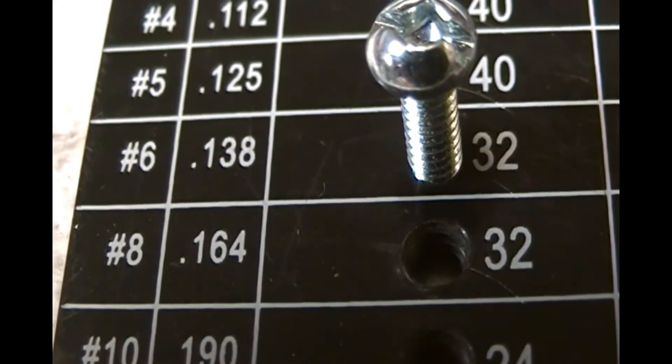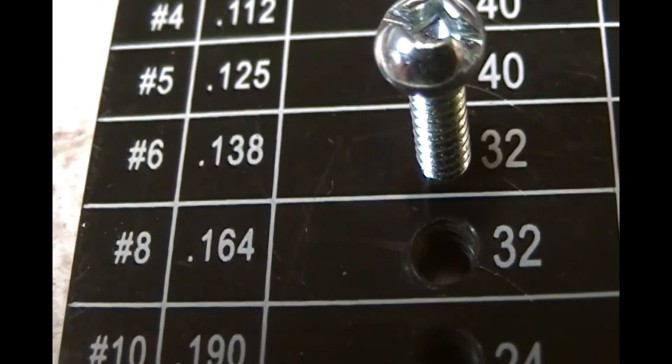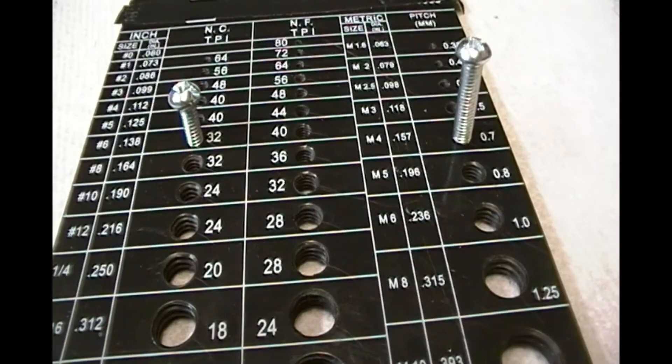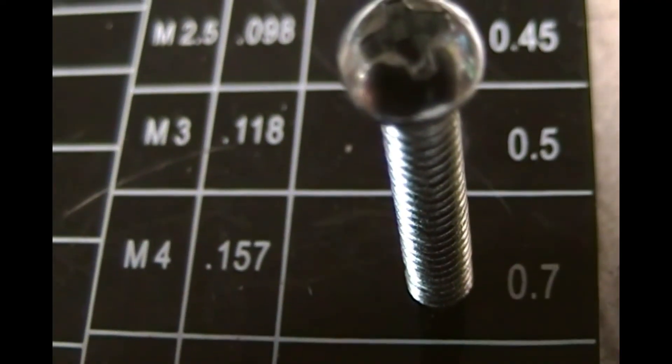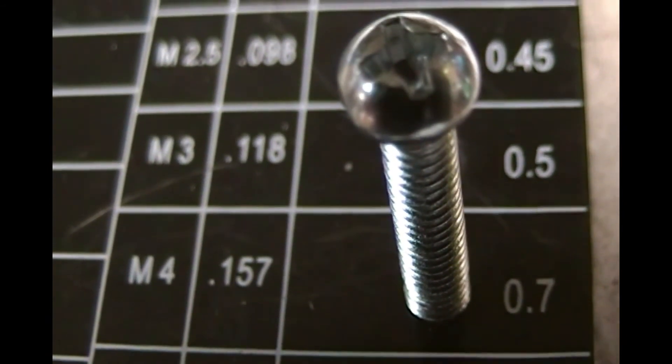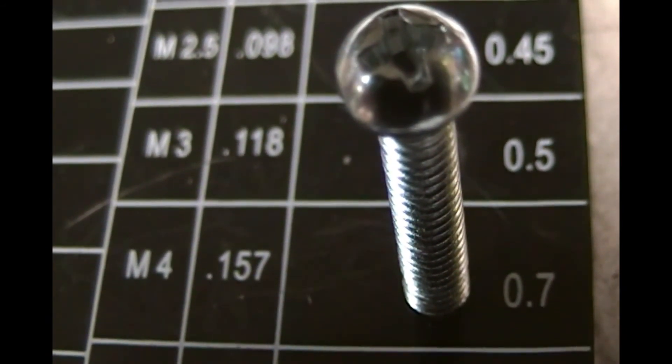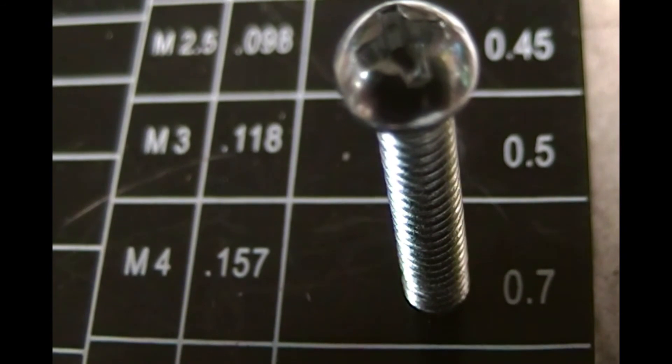In this project, I mentioned several times that I used 6-32 screws. A slightly larger metric equivalent screw is a 4 millimeter screw. Its tap and drill size is 3.4 millimeter, and its clearance drill size is 4.5 millimeters.